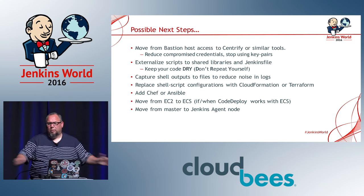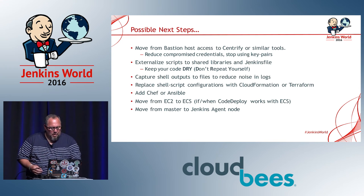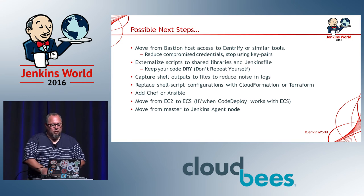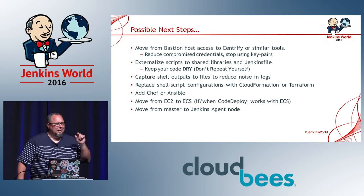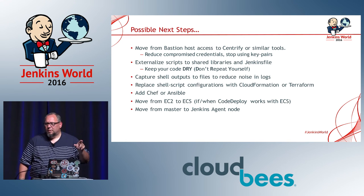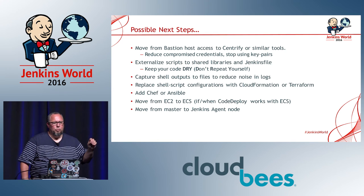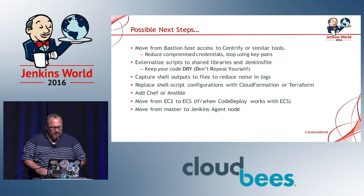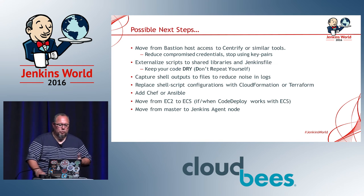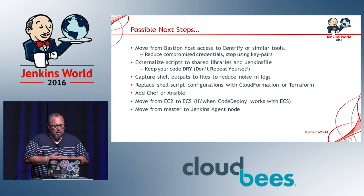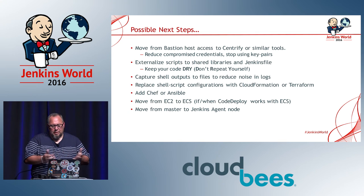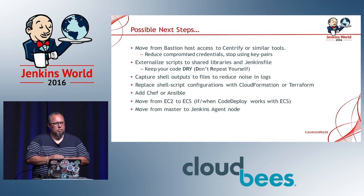Possible next steps: move to a central security model instead of a bastion. Externalize my scripts to shared libraries — I have code downloaded from one of CloudBees' example sites that connects your Jenkins server to whatever Git repo you want, allowing you to store your global libraries in that repo and reuse them throughout multiple pipeline scripts. I also want to switch to CloudFormation and Terraform, and look at Chef and Ansible, and ECS instead of just EC2. This build was actually happening on a master server — I didn't connect it to my agents — so I should do that, since it's considered bad form to build on the master.